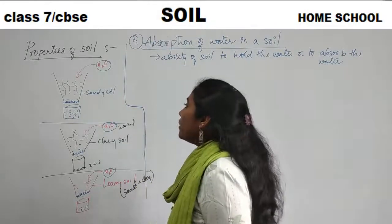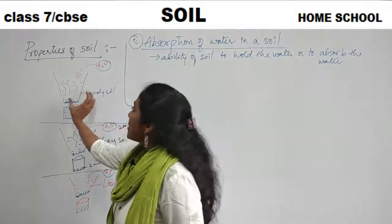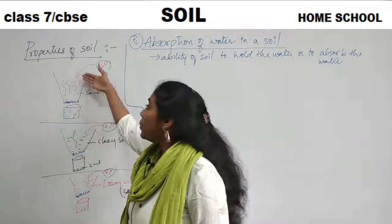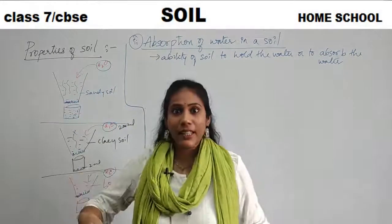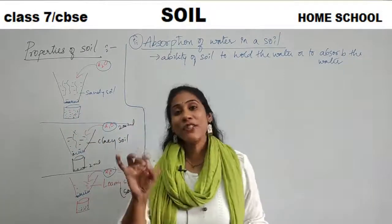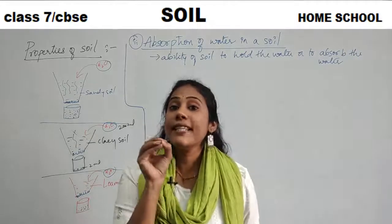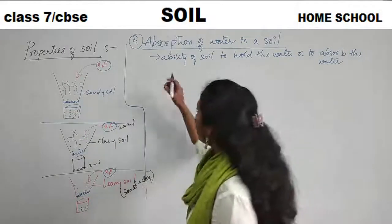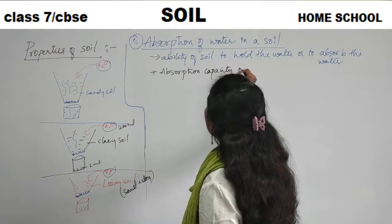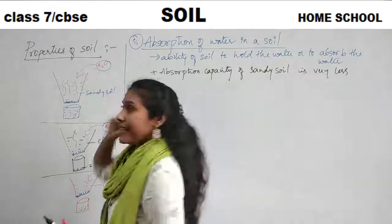Here we have sandy soil in the first case, clay soil in the second, and loamy soil in the third. For sandy soil, when you pour water, the entire amount of water is collected in the beaker below. That means percolation is very high — the soil is not holding the water at all. So the absorption capacity of sandy soil is very less.